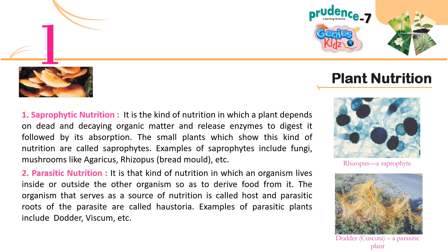2. Parasitic Nutrition: It is the kind of nutrition in which an organism lives inside or outside another organism so as to derive food from it. The organism that serves as a source of nutrition is called the host, and the parasitic roots of the parasite are called haustoria. Examples of parasitic plants include dodder, Viscum, etc.